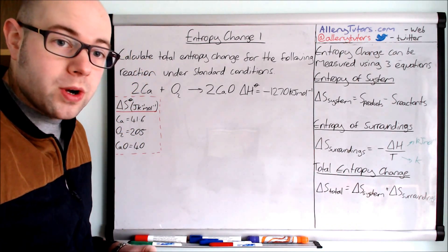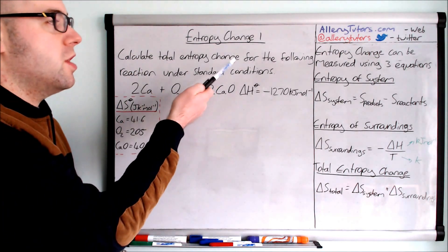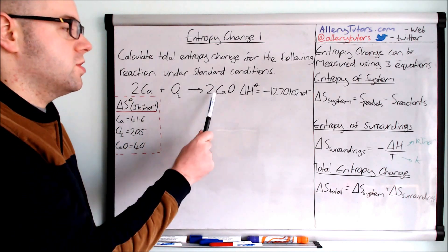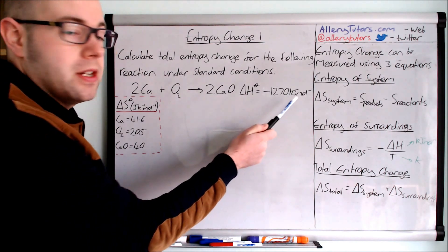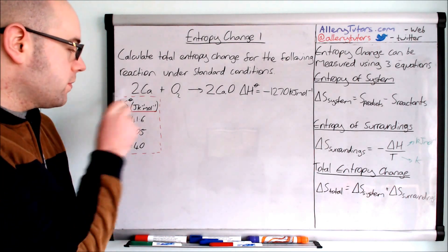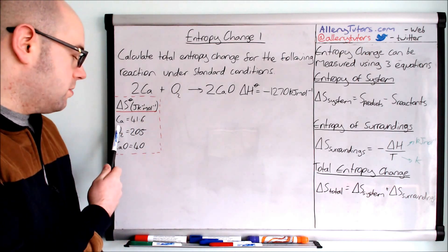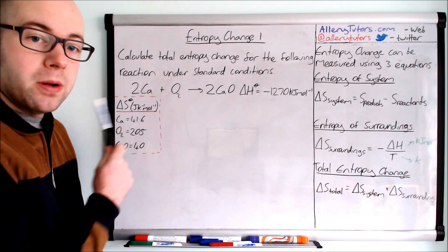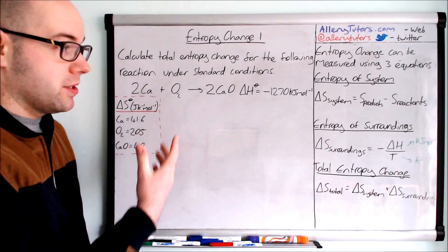We're going to go through a worked example to show you how you'd actually work this out. The question is: calculate the total entropy change for the following reaction under standard conditions. We've got two moles of calcium reacting with oxygen to form two moles of calcium oxide. We also have an enthalpy change of minus 1270 kilojoules per mole — this is an exothermic reaction. We've also been given entropy data for calcium, oxygen and calcium oxide, and the units for entropy are joules per kelvin per mole.